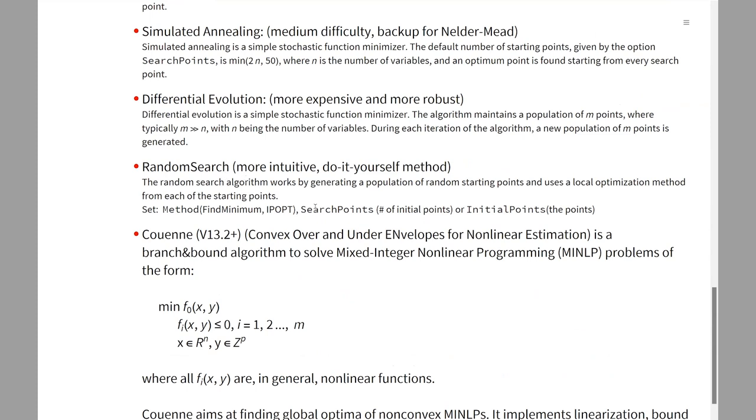We have two stochastic algorithms that are more robust. One of my favorites is RandomSearch because you can just keep giving more search points, initial points from which it will find local minimums, and then the global minimum will be the best one from the initial points. You can give as many search points as you want until you see that the result is not changing anymore.